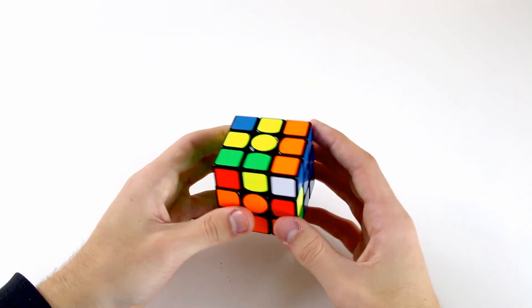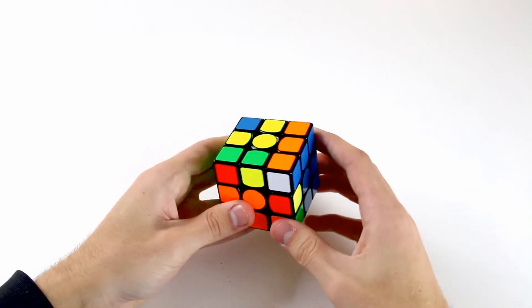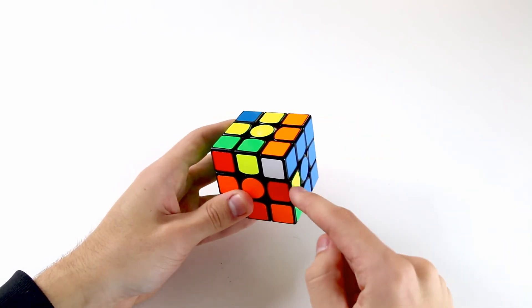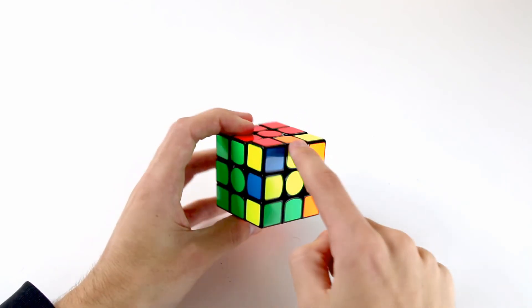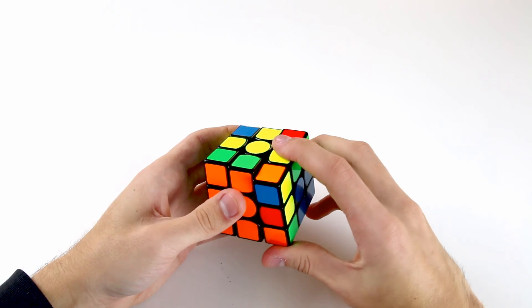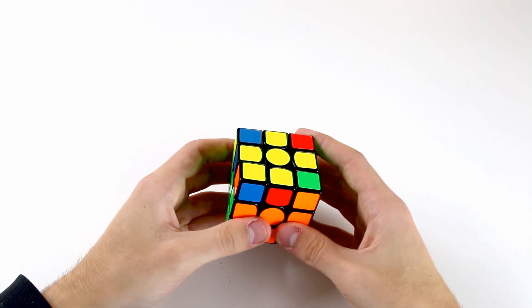So apart from the dot case, the other place where you might want to use this is where you have these two edges in the back both oriented and these two misoriented. So it's the same thing, we're just orienting these two but this time we have these two oriented so that when we do our sledgehammer, R', F, R, F', we'll get an OLL case with all of the edges oriented.